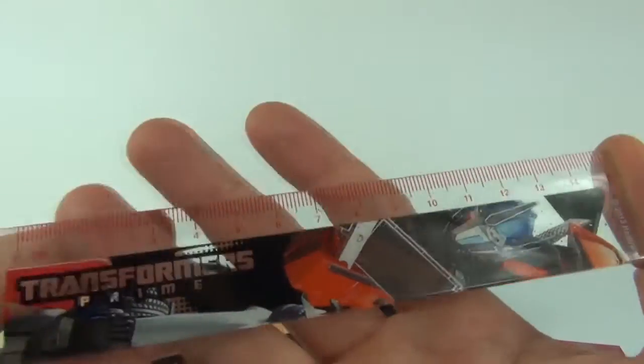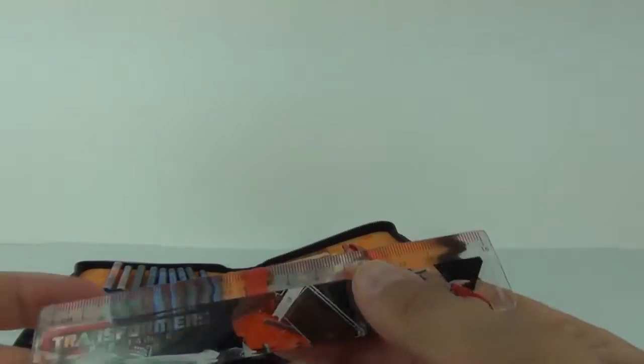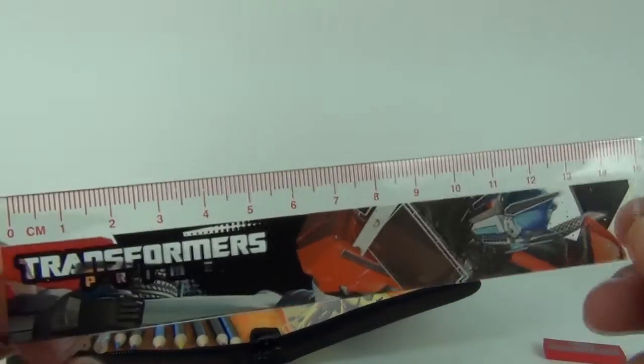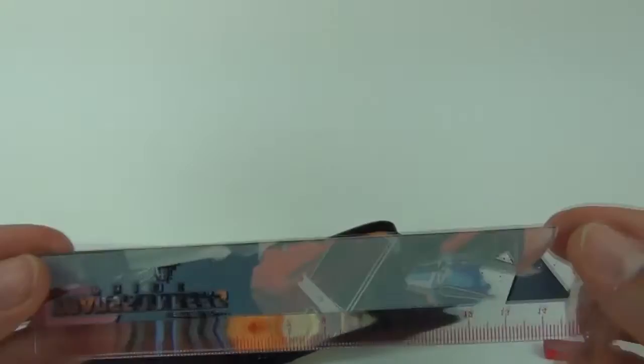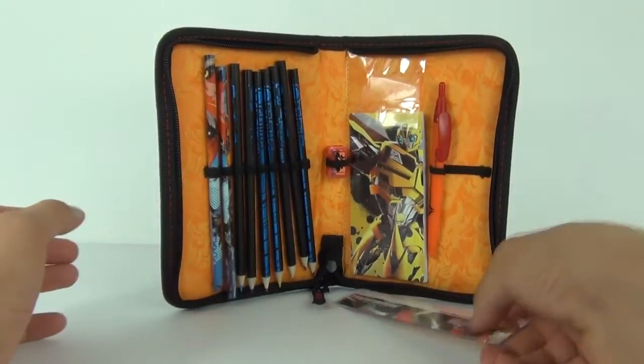And then last but not least, we get this really awesome looking Transformers Prime ruler, which is a 15 centimeter ruler, and that picture is actually printed on, it's not a sticker, so that is an extra thumbs up for that ruler. But there you go, there is one awesome stationery set that you can take to school with you this term.